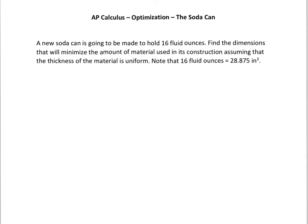Hey everybody, it's Mr. N here, and we have another optimization problem. This is one you guys requested, and this is the soda can problem. It says a new soda can is going to be made to hold 16 fluid ounces — I changed it to 16 because we're used to seeing 12. Find the dimensions that will minimize the amount of material used in its construction, assuming that the thickness of the material is uniform.